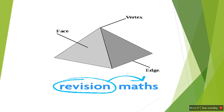Here is another example of a 3D shape — a cuboid. The same parts apply: vertex, edge, and face. The straight lines are edges, the flat surfaces are faces, and the corner points are vertices.